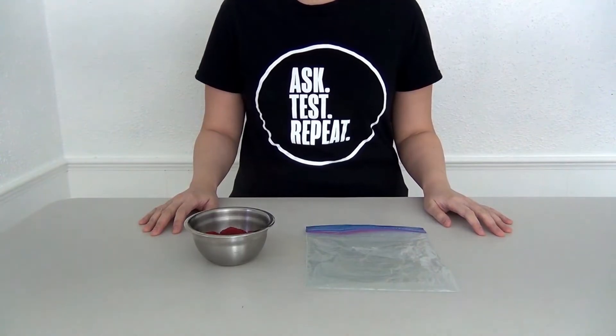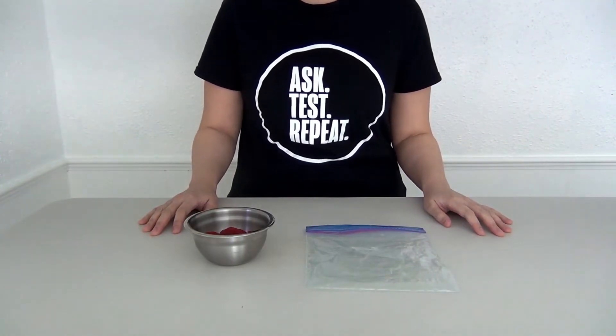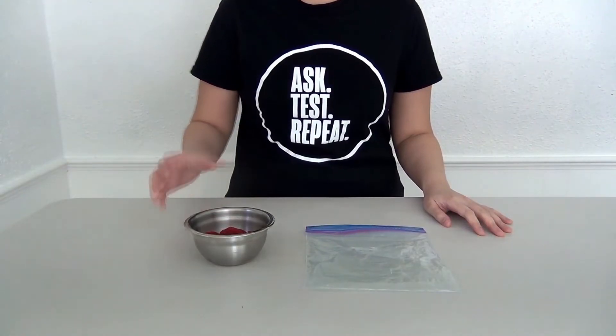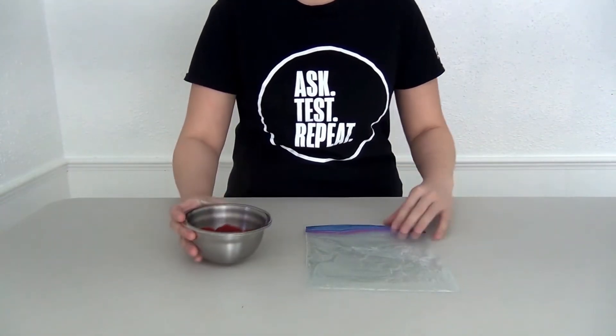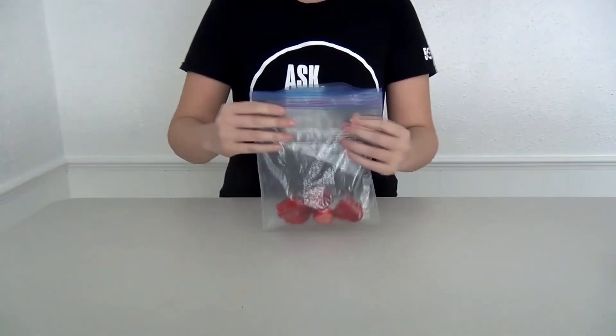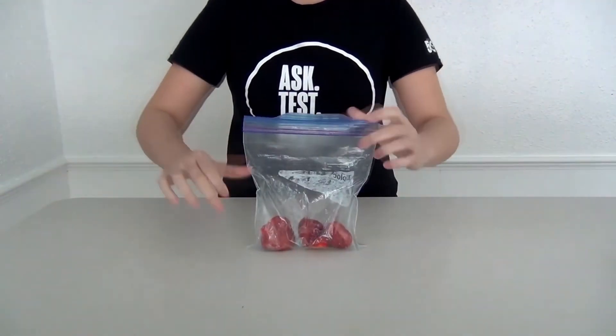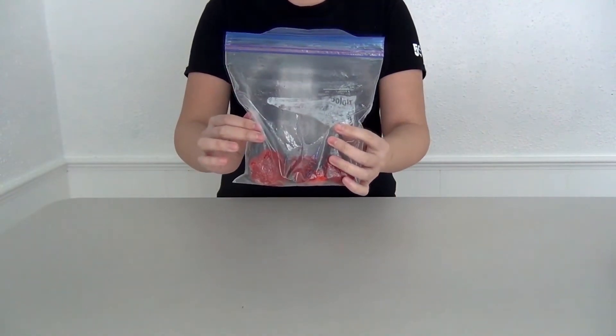For the experiment, the first thing you're going to want to do is to get your alcohol into the freezer so it can chill. We'll be using it later on. Next, you want to grab your produce and you want to put that into your baggie. You want to seal up your bag, try to get out the air, and then you want to mash those strawberries until they're mush.